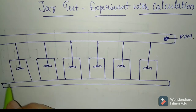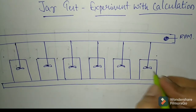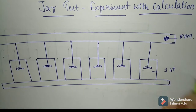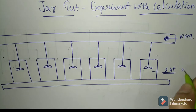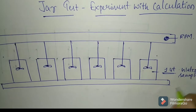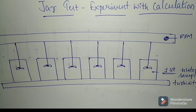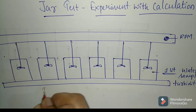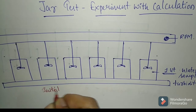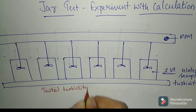When we take out these six jars, first of all we will be filling each of these jars with one liter of the water sample. For the water sample we are taking, we should know its turbidity — that is very important.